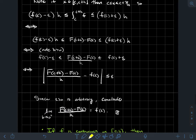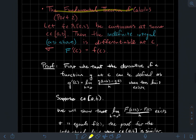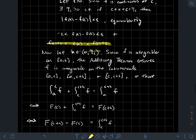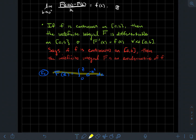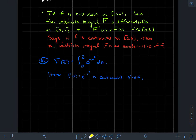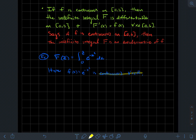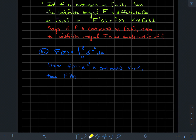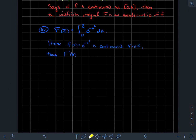Now let's see some of the power of this. The fundamental theorem tells us how to find the derivative of something like the integral from zero to z of e^(−x²) dx, where we differentiate with respect to z. The function little f here is e^(−x²), which is continuous for all real numbers. So by the fundamental theorem of calculus, the indefinite integral is differentiable for all real numbers, and the derivative is just little f evaluated at the top endpoint z. So the answer is e^(−z²).